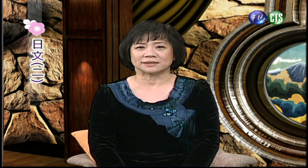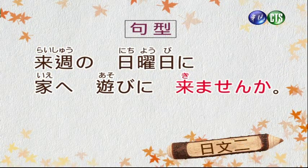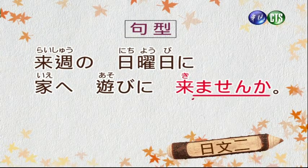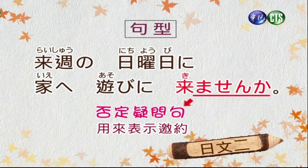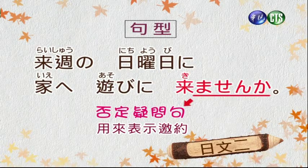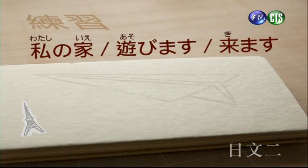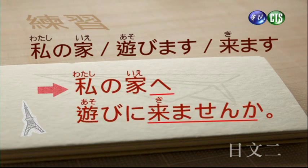来週の日曜日に家へ遊びに来ませんか，這個きませんか的用法是否定疑問句，用來表示邀約，表示下個禮拜天要不要到我家裡來玩呢。遊びにこのに也表示動作的目的。練習：私の家、遊びます、来ます，改成ませんか的邀約用法，會變成：私の家へ遊びに来ませんか（要不要到我家裡來玩呢）。